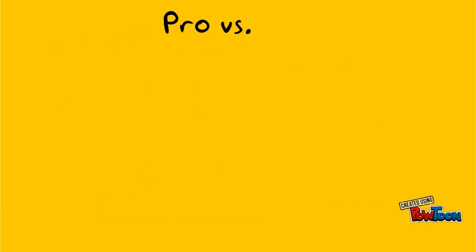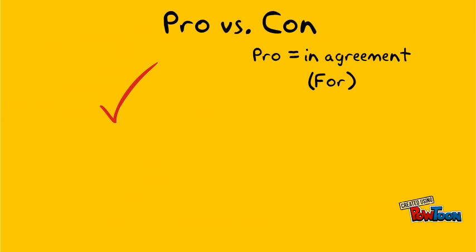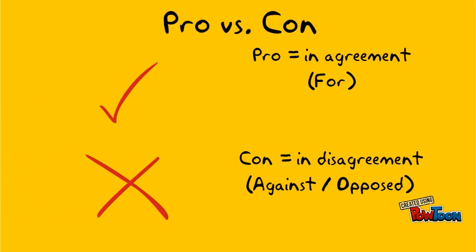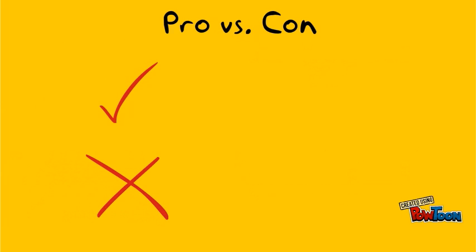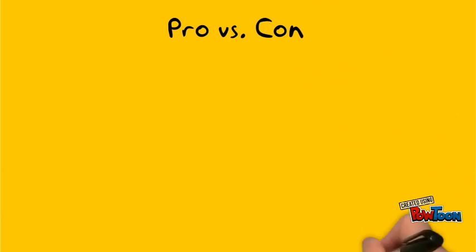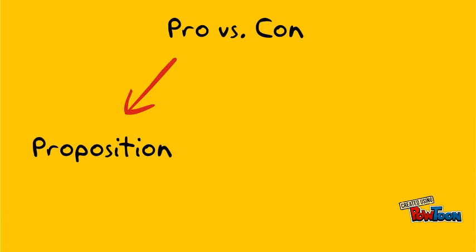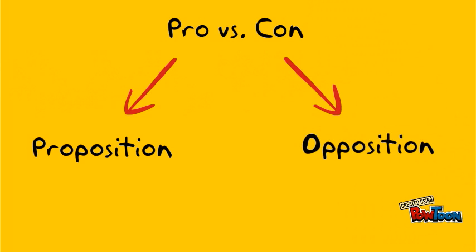Typically, a disagreement has two sides: pro and con. The pro side is in agreement with the issue in question. The con side is opposed to it. In a formal debate, the pro side is referred to as the proposition, and the con side is known as the opposition.